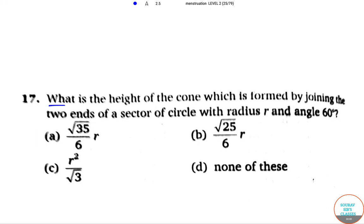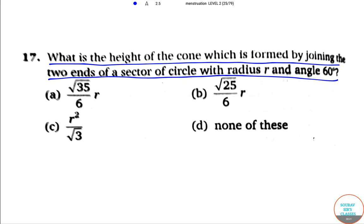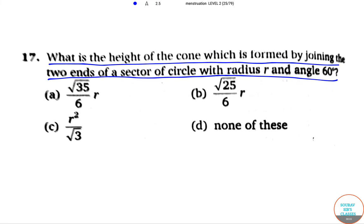What is the height of the cone which is formed by joining the two ends of a sector of a circle with radius r and angle of 60 degrees?